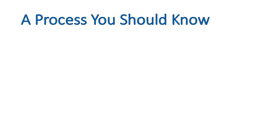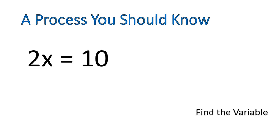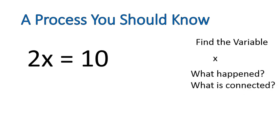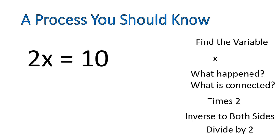A process that you should know, I'm going to show you a very simple equation, 2x is equal to 10. I'm going to show you the process by which I solve this. I say, where is the variable? Well, the variable is x. Then I ask, what happened to my variable, or what is connected to my variable? It's multiplied times 2. To solve the equation, we need to do the inverse operation to both sides. So we're going to divide both sides by 2. x is equal to 5.